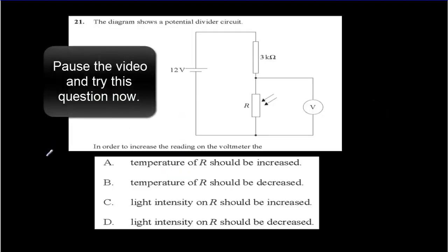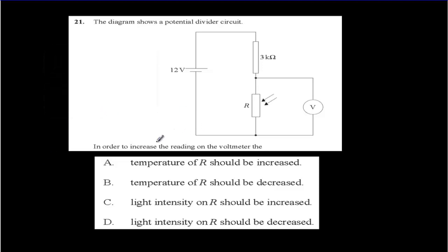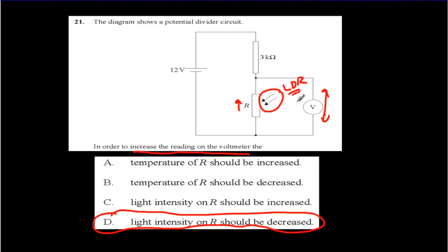Here's a typical IB question. What I'd like you to do is pause the video, try the question, and then come back for the answer. So if we want to increase the reading on the voltmeter, we're going to increase this voltage. That means we need to increase this resistance here. And if we want to increase the resistance, we want to decrease the light intensity. And so the correct answer should be D. And just take note, the two arrows coming in imply that it's a light-dependent resistor here. So be aware of that symbol. And because of that symbol, you can eliminate the first two choices.